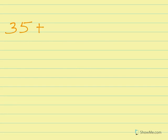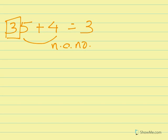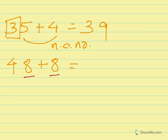Another example: 35 plus 4. Since 5 plus 4 is a non-carrying number, the 3 remains 3 and 5 plus 4 is 9, giving answer 39. Similarly, 48 plus 8: 8 plus 8 is a carrying number, so 4 becomes 5. The n number of 8 plus 8 is 6. Answer is 56.